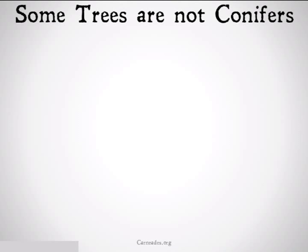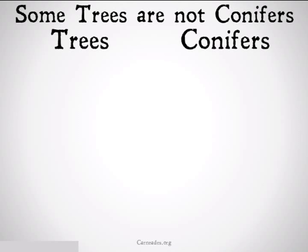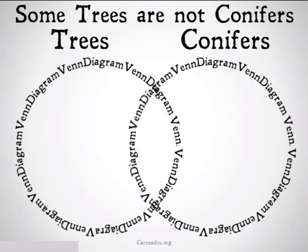An example might be 'some trees are not conifers.' We set up trees and conifers on either side, draw our Venn diagram, and put an X in the area of trees that doesn't overlap with the conifers, because some trees do not have cones — they're not conifers.